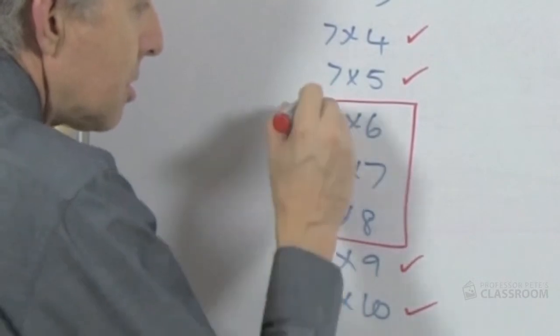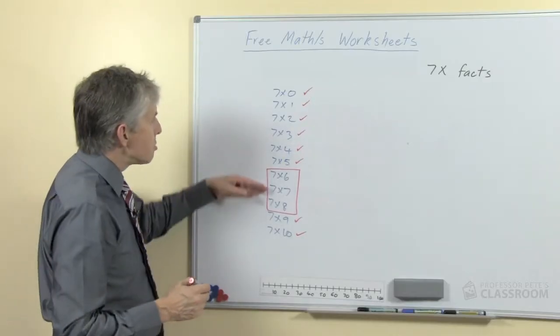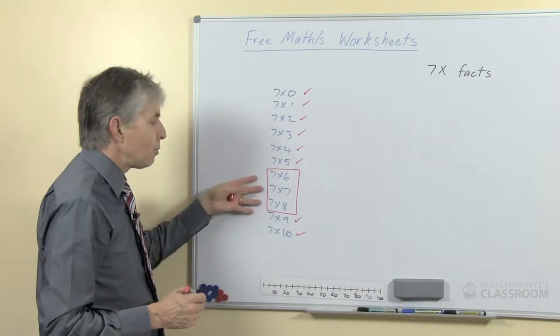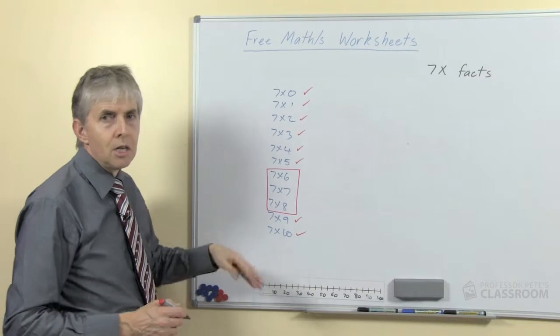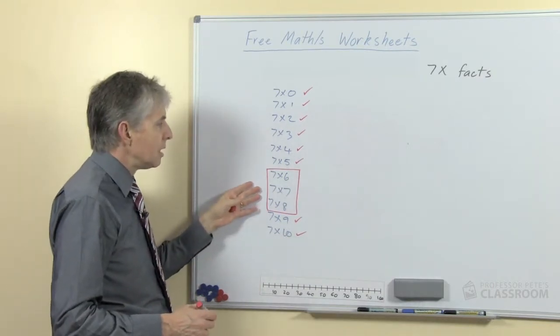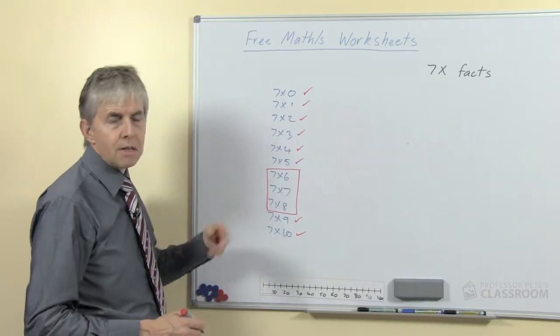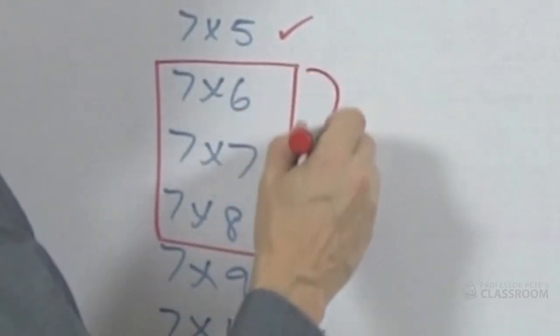So I would point out to students that these are probably the most difficult three and really we've done all the others before. In fact we've done these before as well because if we've already done the sixes and the eights, which I'd recommend that you do because they're a little bit easier than the sevens, then there's really only seven times seven which is a square number. So basically if we focus our attention on those three.